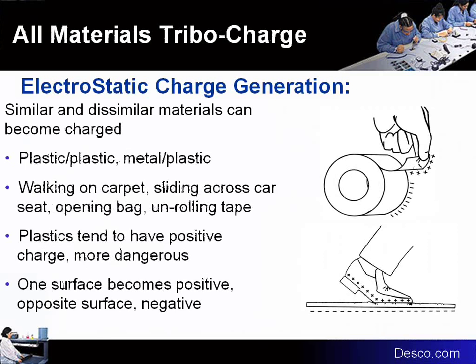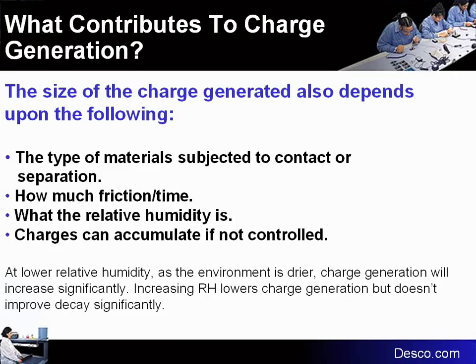Electrostatic generation can happen with any two materials coming together and separating — it can be plastic and plastic, two insulators, or metal and plastic. Walking on carpet is a very common static generator. Plastic tends to have a positive charge and is more dangerous for higher levels, but both positive and negative can do damage. The size of the charge also depends on the materials, how much friction time, the relative humidity, and charges can accumulate if not controlled on conductors.